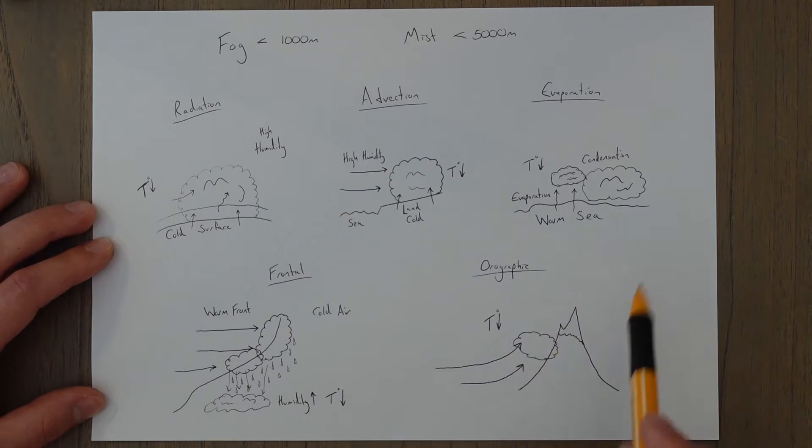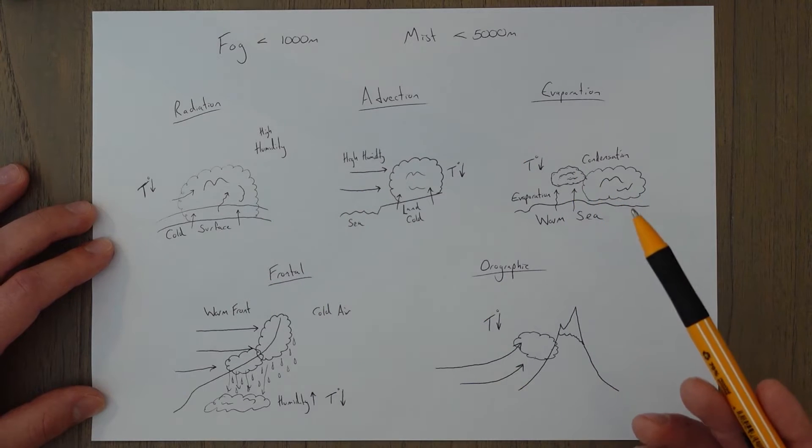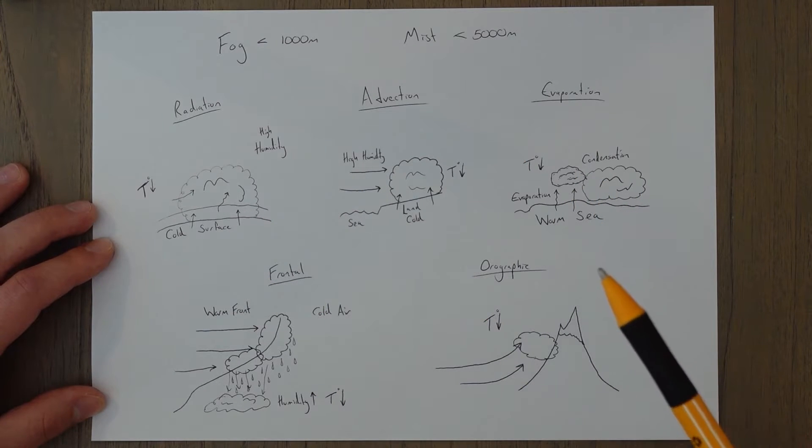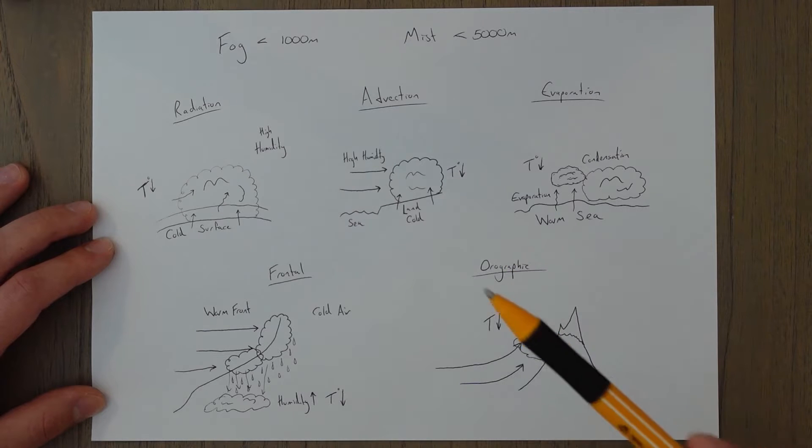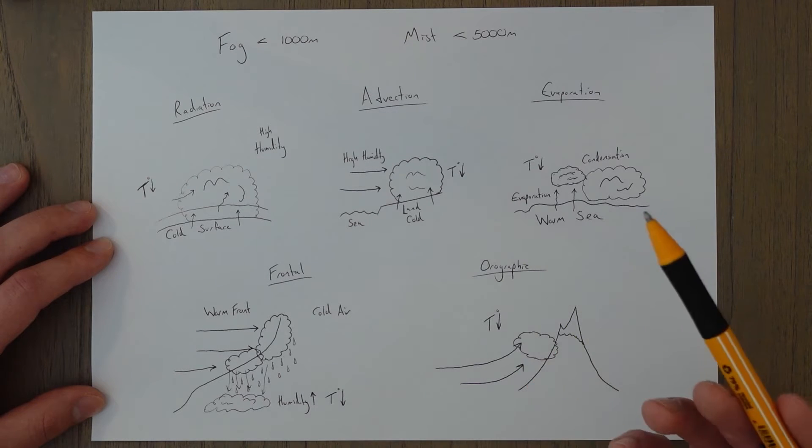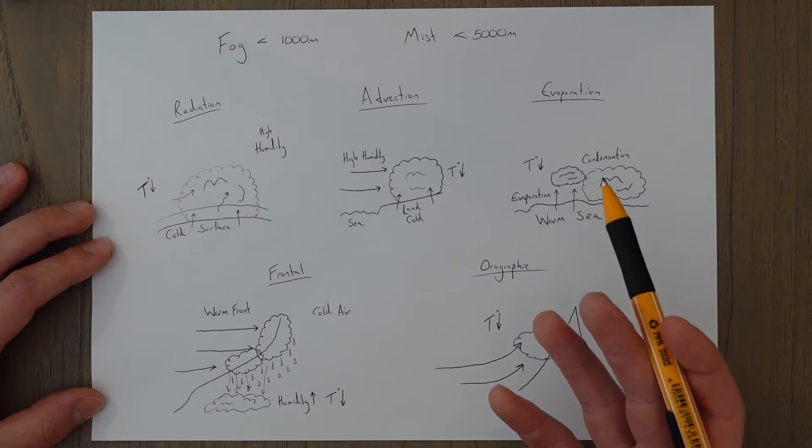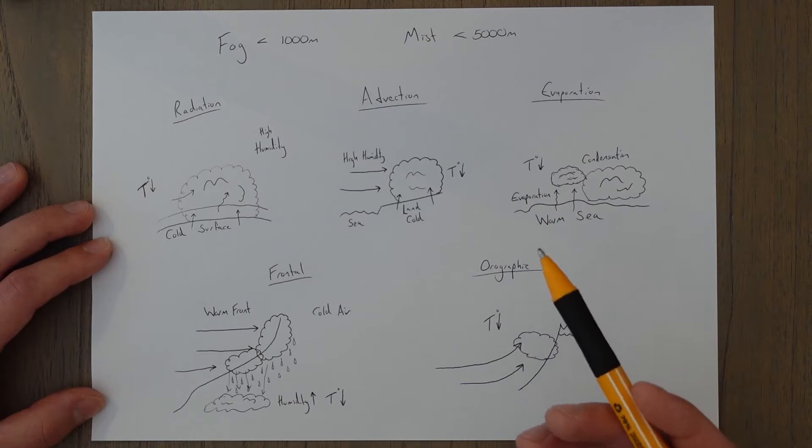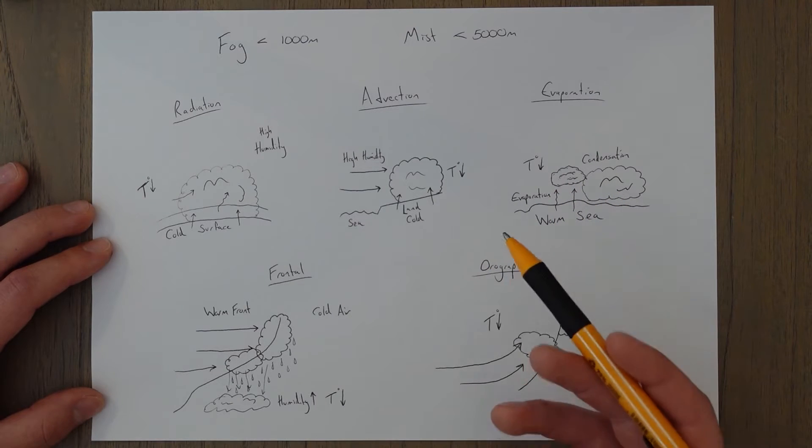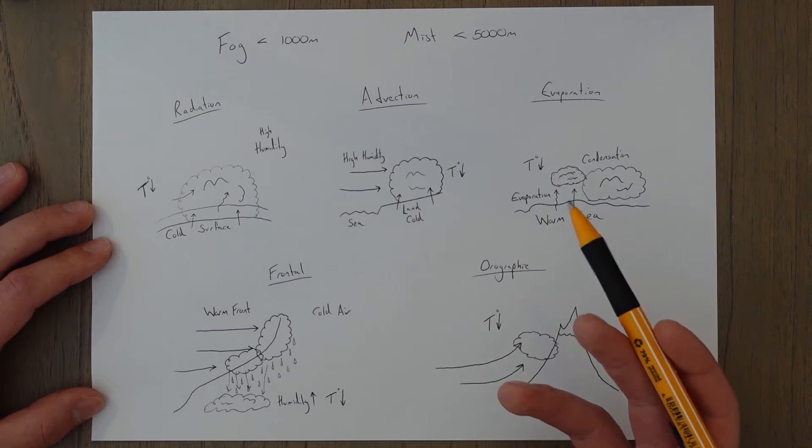So all these types of fog have something in common and it's basically just the cooling down of warm humid air to below the dew point. It's as simple as that, there's just a few methods of doing that. So these are the main causes of natural fog or mist and problems to do with visibility, but you can also get man-made or unnatural visibility problems caused by pollution essentially.